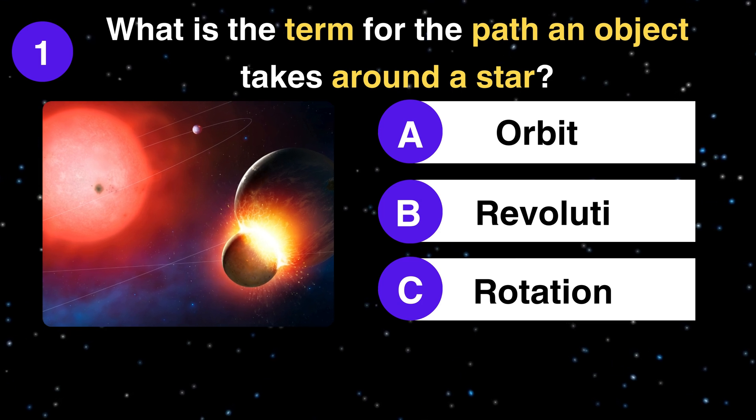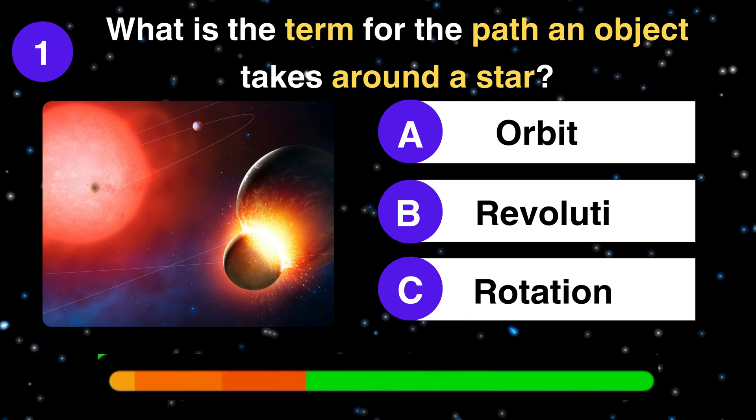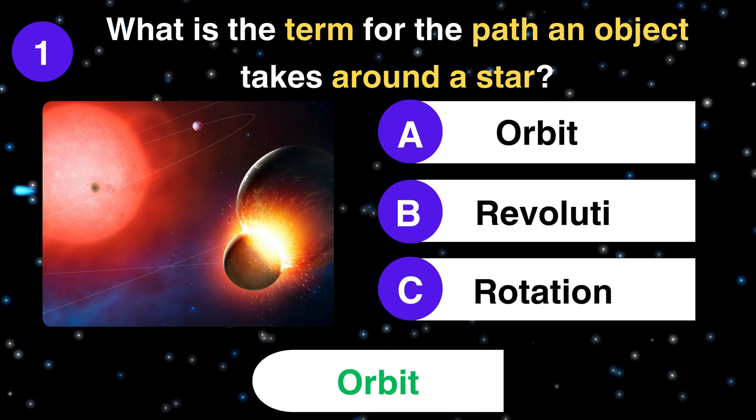What is the term for the path an object takes around a star? Orbit, revolution, or rotation? Orbit.